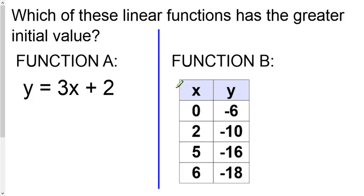So when we get asked which of these two functions has the greater initial value, take a look at function A right here. And if you recall, this is slope-intercept form. That means that this plus 2 right here, that is our y-intercept, that is our initial value for function A. So just make a note, initial value is positive 2.